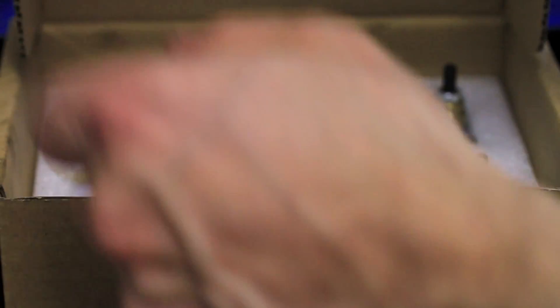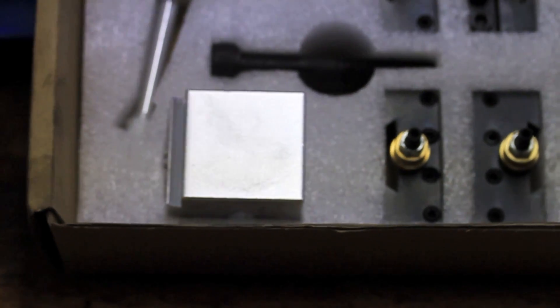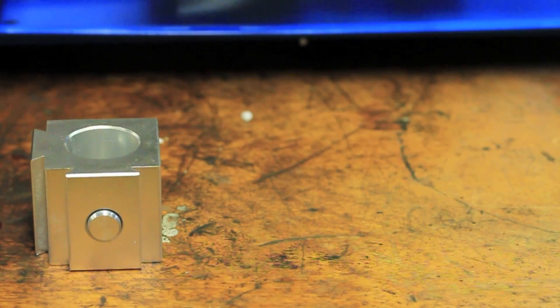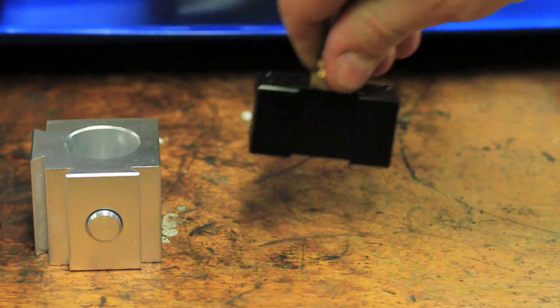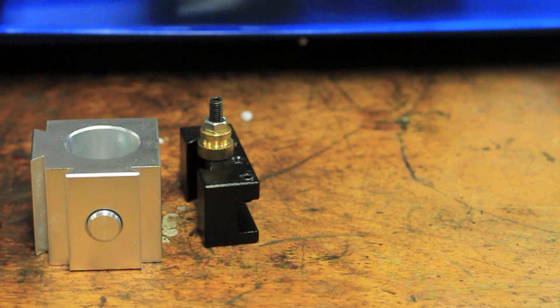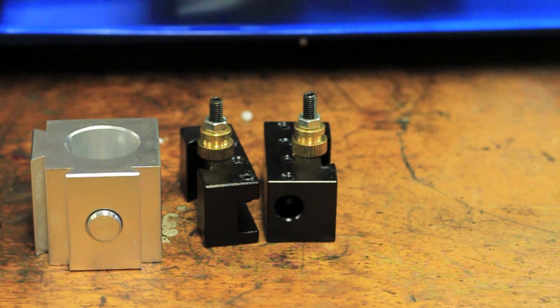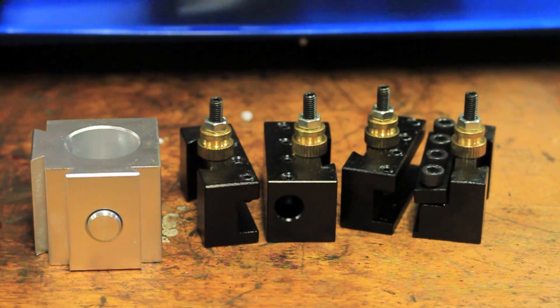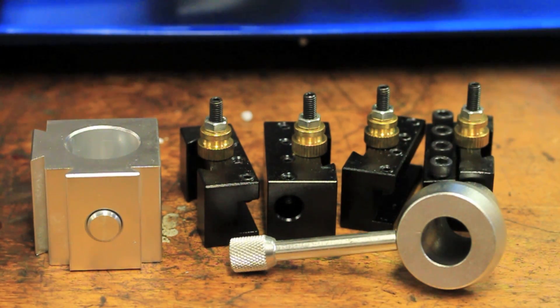I'll also link these below. This is the quick change tool post. It's an easy replacement for the one that exists. It includes two 3/8 square holders, a 3/8 round boring tool holder, as well as a half inch cutoff tool holder.